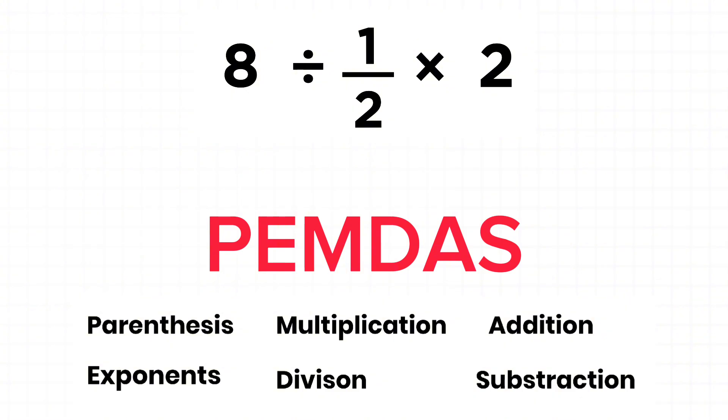M stands for multiplication, D for division, A for addition, and S for subtraction. Multiplication and division have the same priority; we execute whichever comes first from left to right.